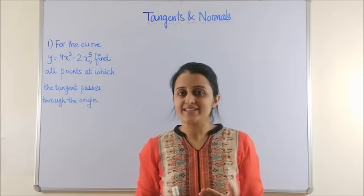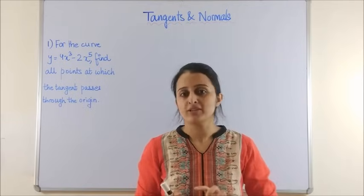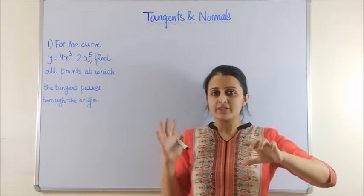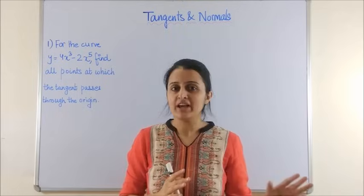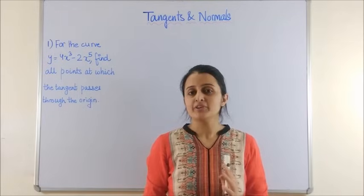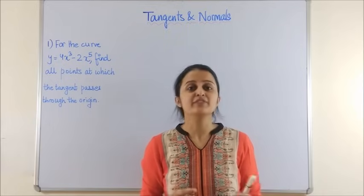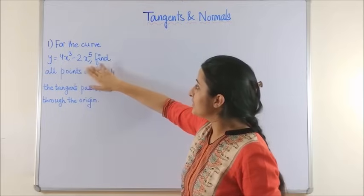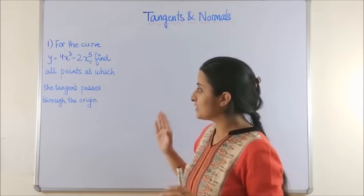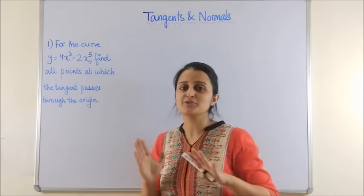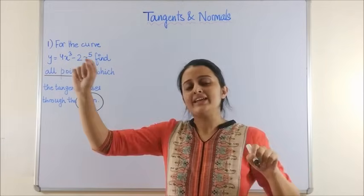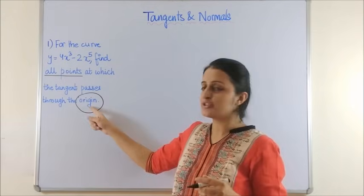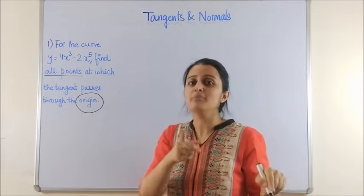Let's move to the next segment of this video where I have a few important, tricky and board-based questions. These questions are going to be a mix of everything we have covered in tangents and normals so far, so please revise the previous two parts if you haven't done that yet. Looking at the first question: for the given curve, find all points at which the tangent passes through the origin. The tangent line passes through the origin, but that does not mean the origin (0, 0) is the point of contact.